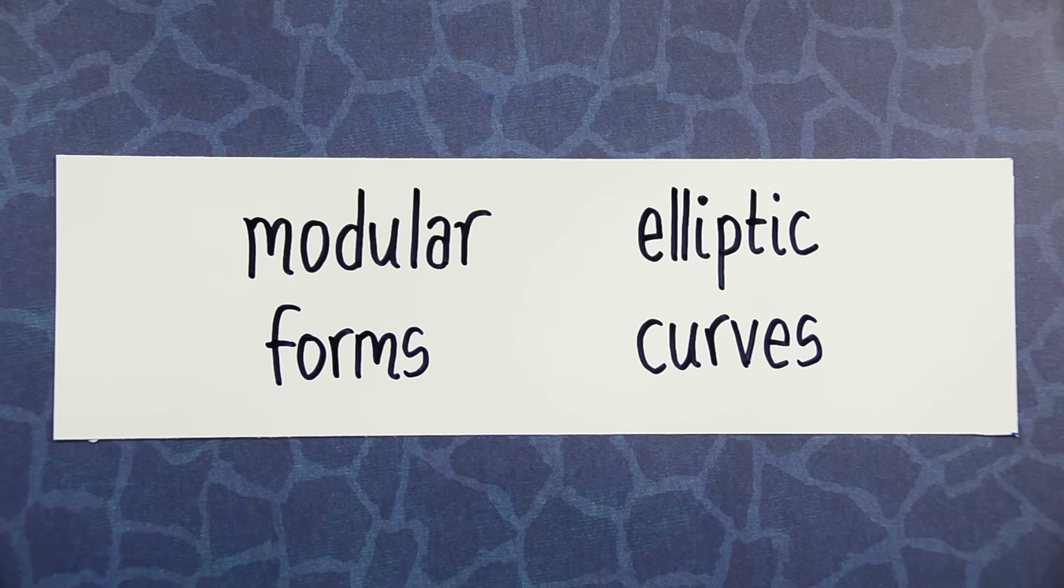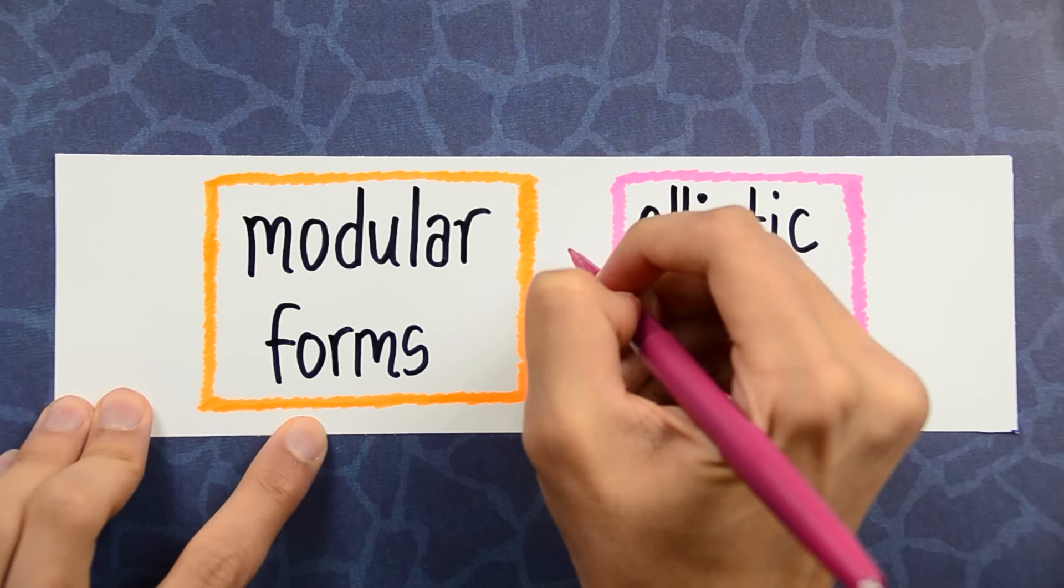In other words, we have two worlds: modular forms and elliptic curves. What we've done is, to a modular form, we've attached to it an elliptic curve.